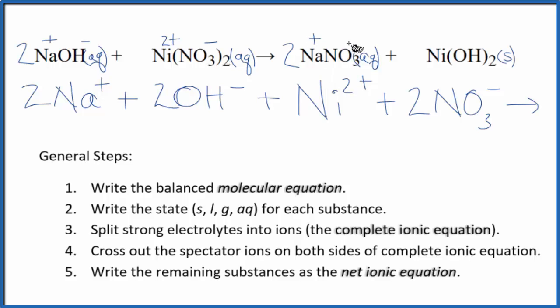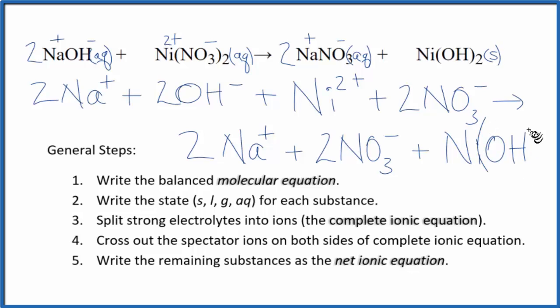In the products, we have 2 sodium ions, and then 2 of the nitrate ions. For the nickel 2 hydroxide, we're not going to split that apart because it's a solid. So we're just going to have Ni(OH)2, nickel 2 hydroxide. And this is the complete ionic equation.